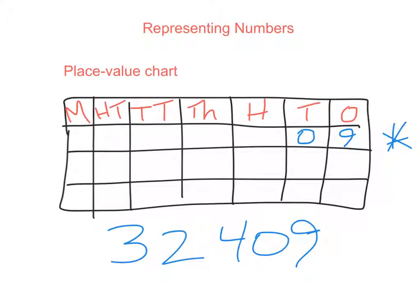So in the ones place value, we have a nine. And in the tens, we have a zero. And the hundreds, we have a four. And in the thousands, we have a two. And in the ten thousands, we have a three. And there you have it. We just put our own number in there.